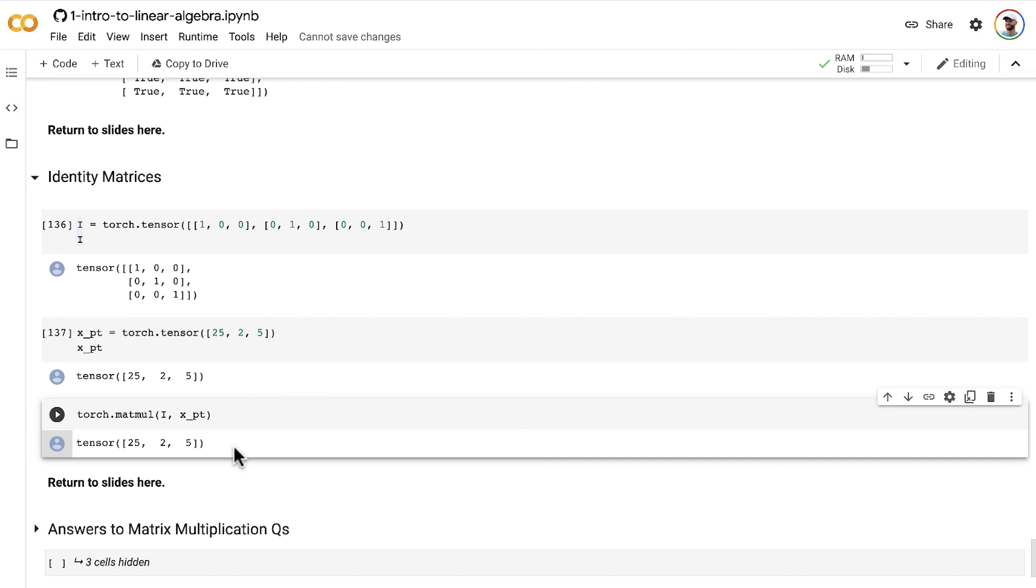Up next are three comprehension exercises on matrix multiplication that include an identity matrix. After that, we'll move on to the all-important matrix inversion operation, which relies directly on an understanding of identity matrices.